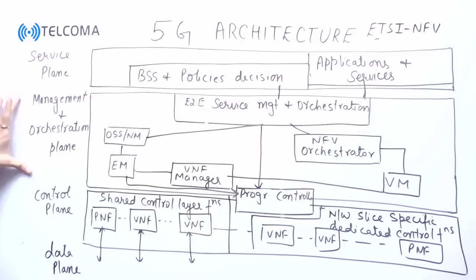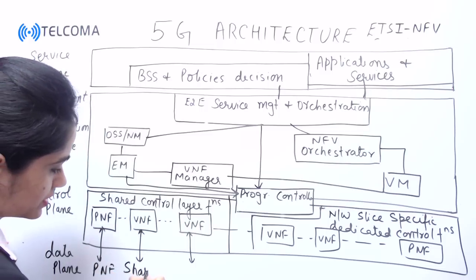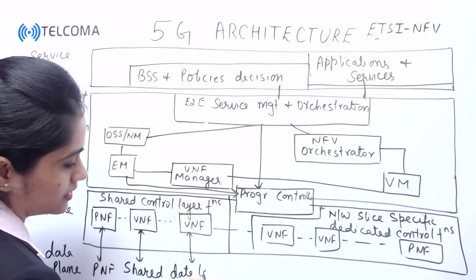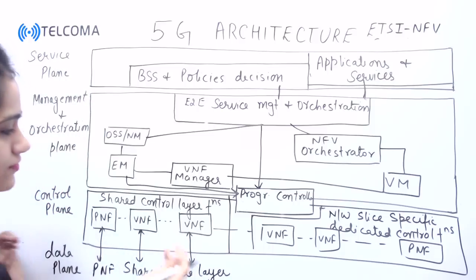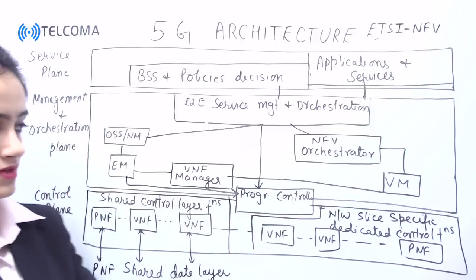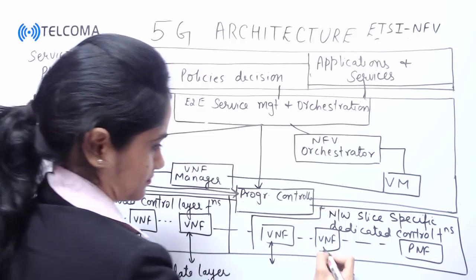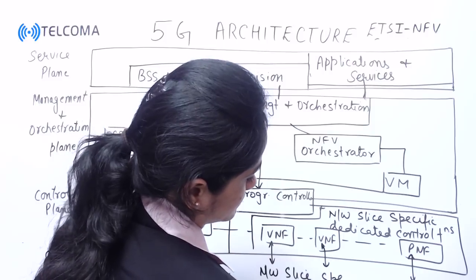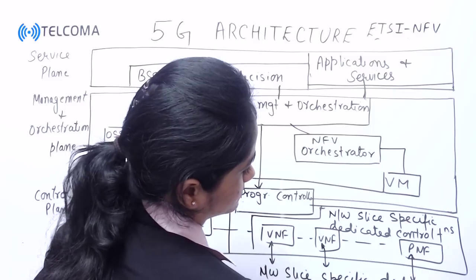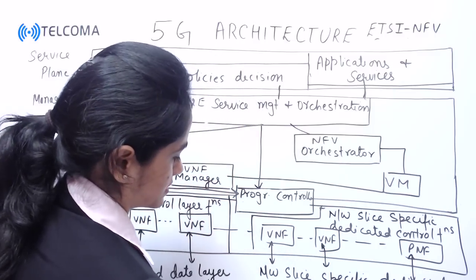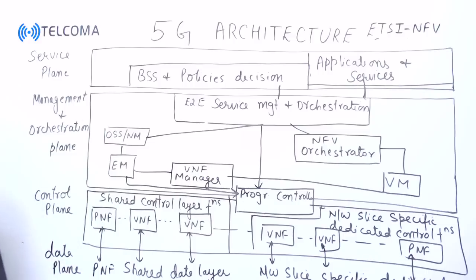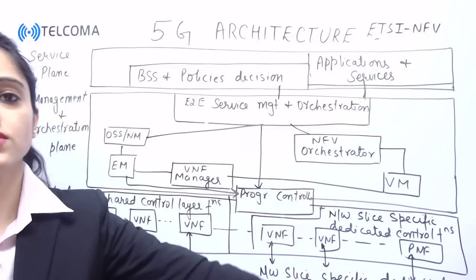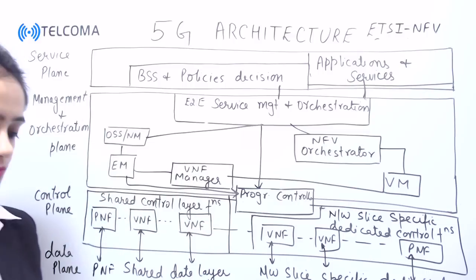The next plane is the data plane. Here we have shared data layer functions which control various PNFs, VNFs, etc. We also have network slice specific dedicated data functions. These are further connected accordingly. This is the architecture proposed by ETSI.